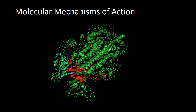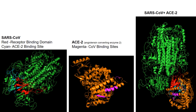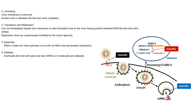The mechanism of action for the SARS coronavirus has five steps. The first step is attachment and penetration: the spike glycoprotein recognizes and attaches to ACE2 located on the cell membrane. The spike proteins are then used to mediate cell membrane fusion and endocytosis. In the second step, called uncoating, the virus membrane is removed and the nucleic acid from the coronavirus is released into the host cell's cytoplasm.